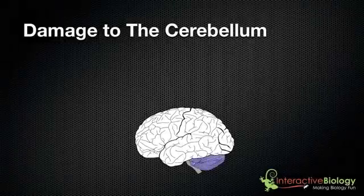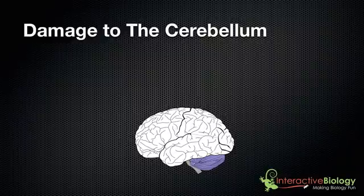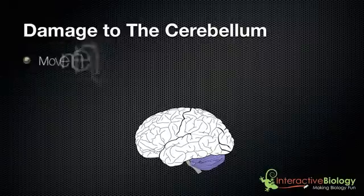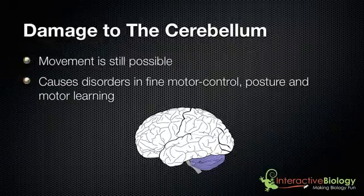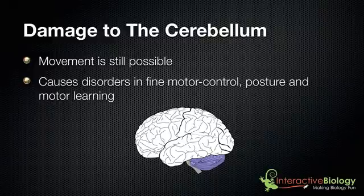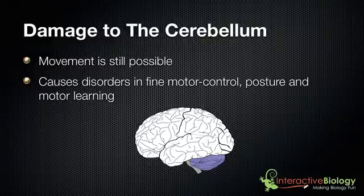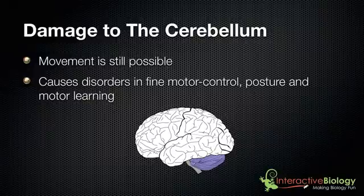Now let's talk about what happens when there's damage to the cerebellum. The cerebellum doesn't cause motion, but it just coordinates it. So if there's damage to the cerebellum, movement is still possible. However, it's going to cause disorders in fine motor control, posture, and motor learning. For example, in the stair-climbing scenario, if the brain does not know exactly where your foot is or can't calculate how far you need to go, it can cause problems with walking up the stairs. It can also cause jerky movements because the cerebellum is not able to fine-tune that motion and coordinate it in the way that it normally does.